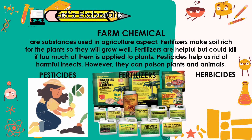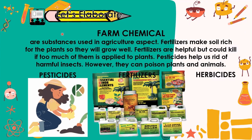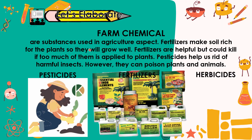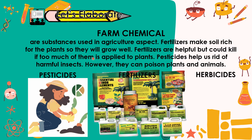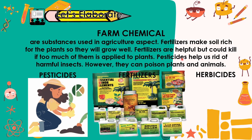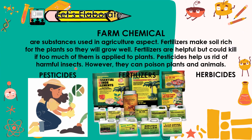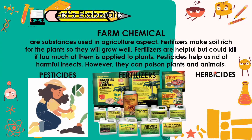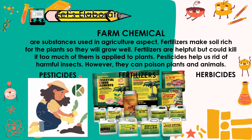The next one is what we call farm chemicals. Farm chemicals are substances used in agriculture, farming, and gardening. Fertilizers make soil rich for plants so they will grow well, but could be harmful if too much is applied. Pesticides help rid us of harmful insects that may infect our plants; however, they can poison plants and animals if overused. Examples of farm chemicals are pesticides, fertilizers, and herbicides.